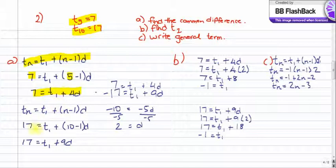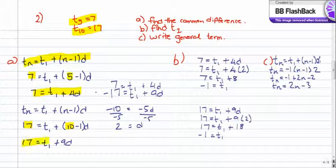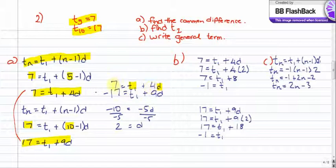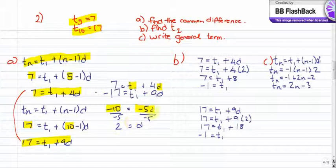Now let's do it for term 10 equals 17. Start with our formula again. T of N is 17 and N equals 10, so we get 17 equals T1 plus 9D. We now have two equations: 7 equals T1 plus 4D, and 17 equals T1 plus 9D. We eliminate T1 by subtracting. 7 minus 17 gives negative 10, T1 cancels, and 4D minus 9D gives negative 5D. Dividing both sides by negative 5 gives a common difference of 2.